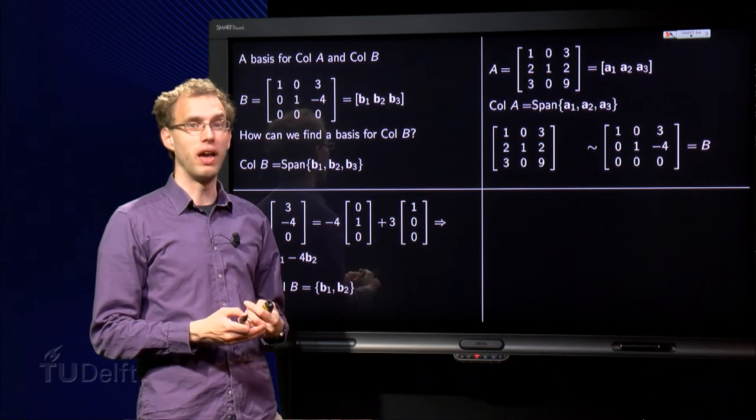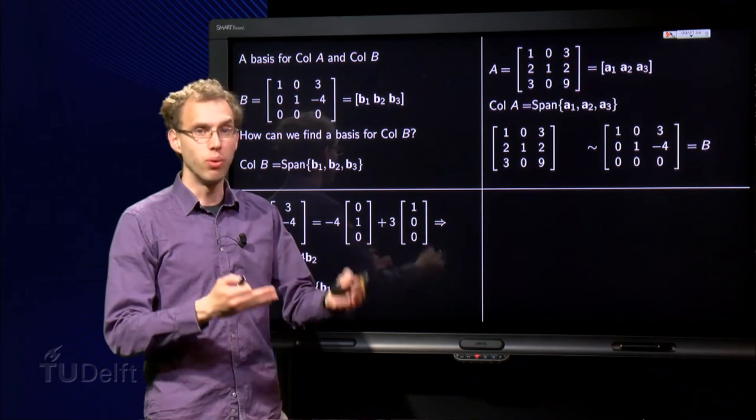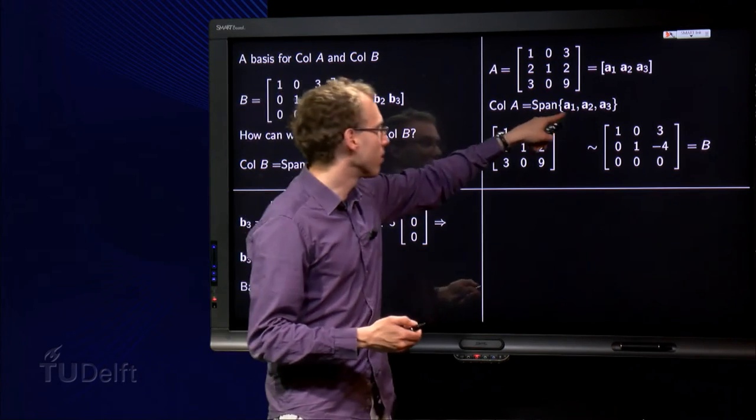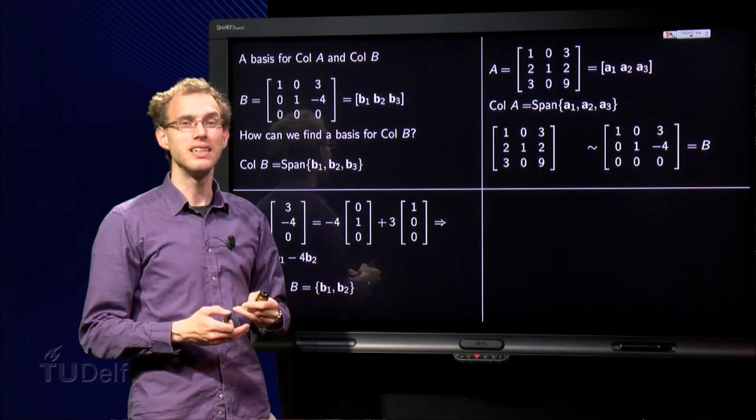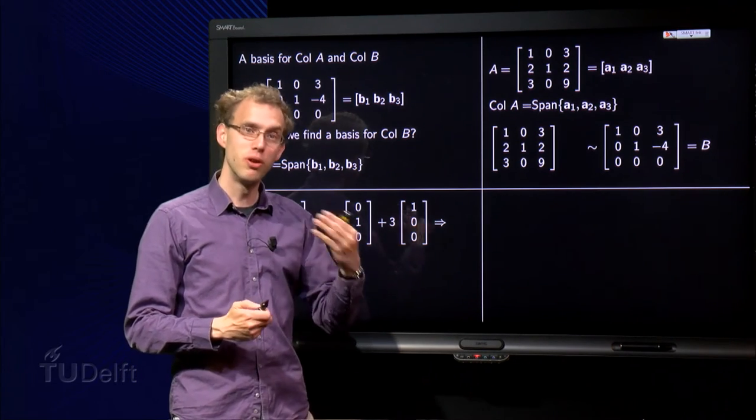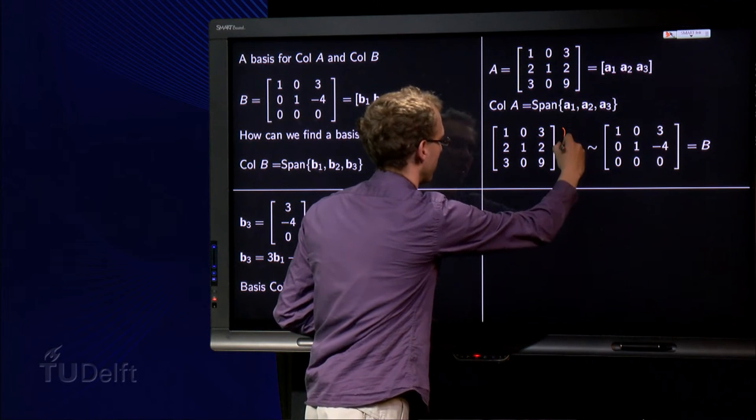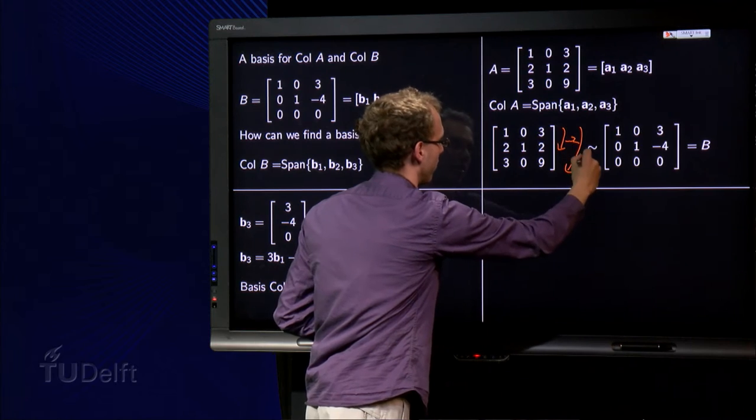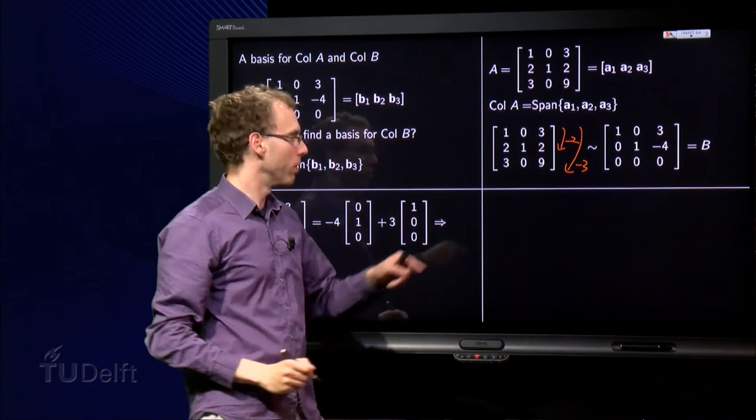but the basis of col A is {a₁, a₂, a₃}, and if the columns are dependent, then the basis is smaller. So let us see, let us do some row reduction, subtract twice over here and three times over here.